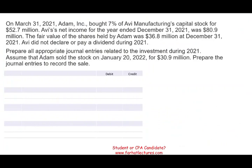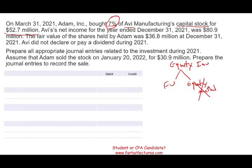Let's take a look at this exercise. On March 31st, Adam Inc. bought 7% of the capital stock of Avi's company for $52.7 million. They bought 7%, which means we cannot use the equity method. We're talking about capital stock, not debt, so we are dealing with an equity investment. We cannot use the equity method because we own less than 20% — the equity method is between 20 and 50%. Therefore, we're going to use fair value. We debit investment in equity securities and credit cash for $52.7 million. Pretty straightforward — we record it at cost.